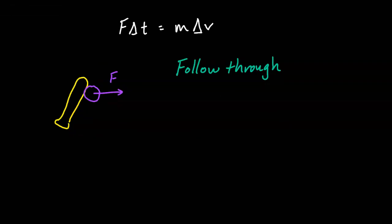The impulse-momentum theorem also helps us understand why coaches ask players to follow through when hitting a ball in baseball, softball, or tennis. When you follow through, you're increasing the time of contact. As you increase the time, you increase the momentum, which means the ball is going to go faster and farther. In the next video, we'll look at mathematical problems that apply the impulse-momentum theorem.